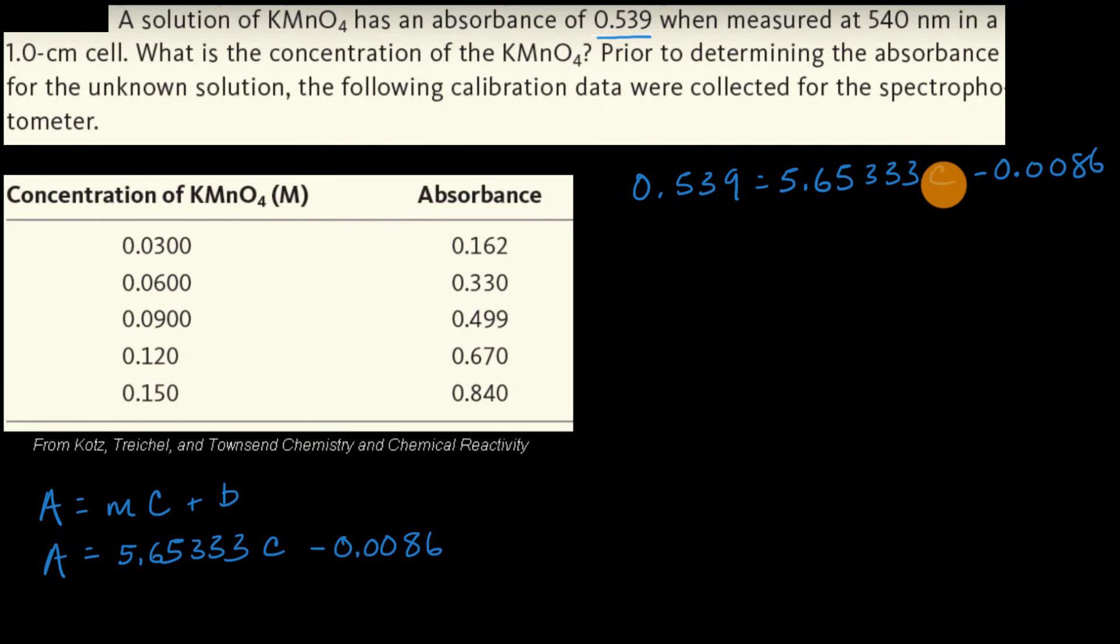To solve for C, we add 0.0086 to both sides. So we get 0.539 plus 0.0086 equals 5.65333 C. Then divide both sides by 5.65333.